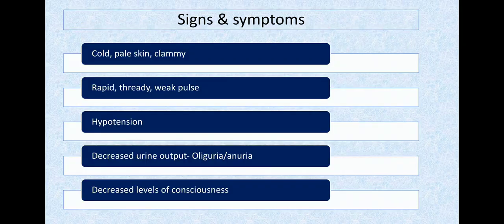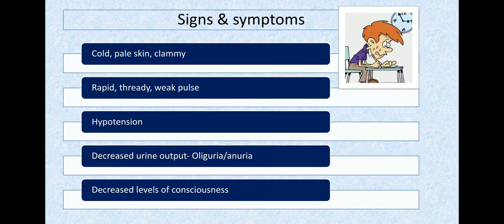It's a collection of various signs and symptoms. The first is cold, pale, clammy skin. Why is the skin cold and pale? Because cutaneous blood flow is reduced. In early stages, autoregulatory mechanisms shunt blood preferentially to the brain, heart, and adrenal. Flow to less critical organs is reduced.